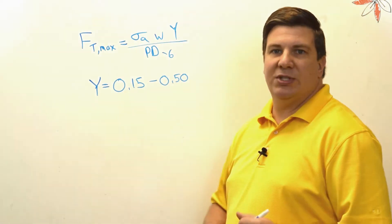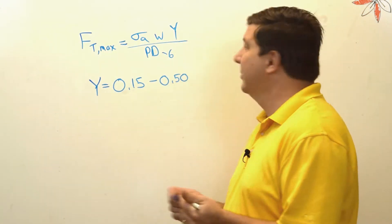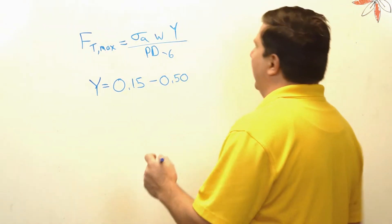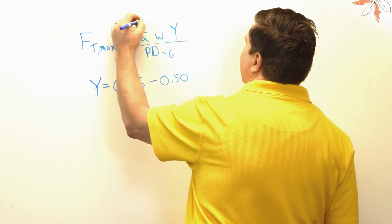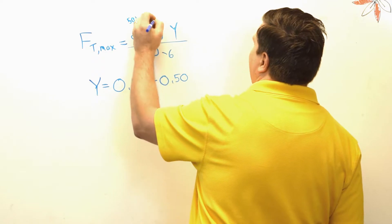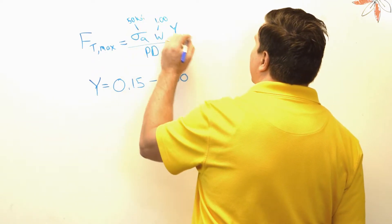So let's assign some numbers to this and just see what we get. I'm going to say that my gear is made out of some mild steel at 50 ksi, and my width is one inch.